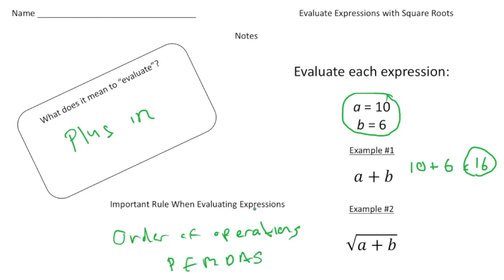All right let's try the second example. Here we have the square root of a plus b. So again I'm going to this time substitute the 10 for the a and the 6 for the b. And when I simplify that we're going to end up with the square root of 16 and the square root of 16 can be either positive 4 or negative 4 as our answer. And there it is.